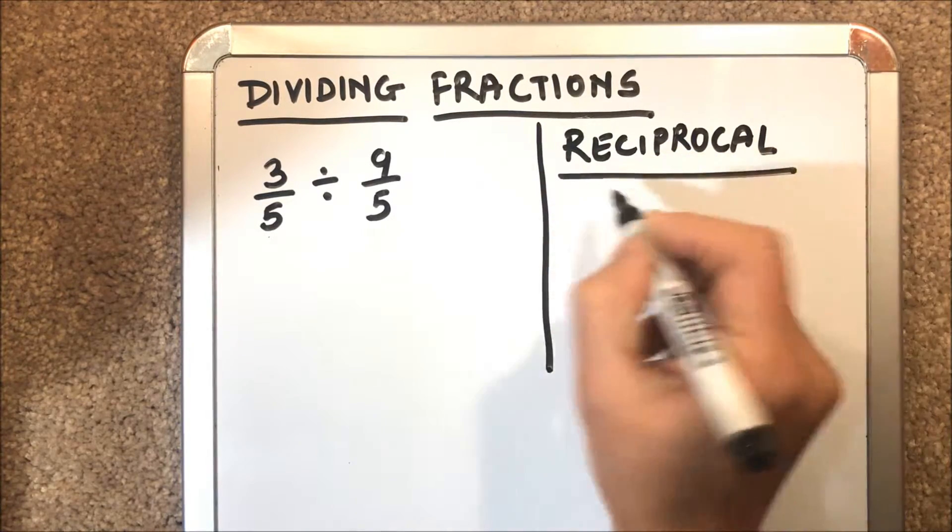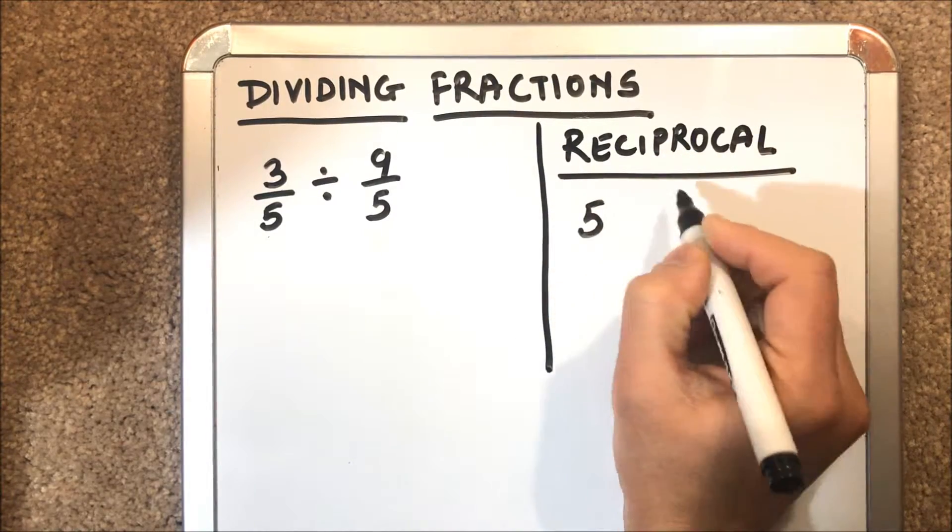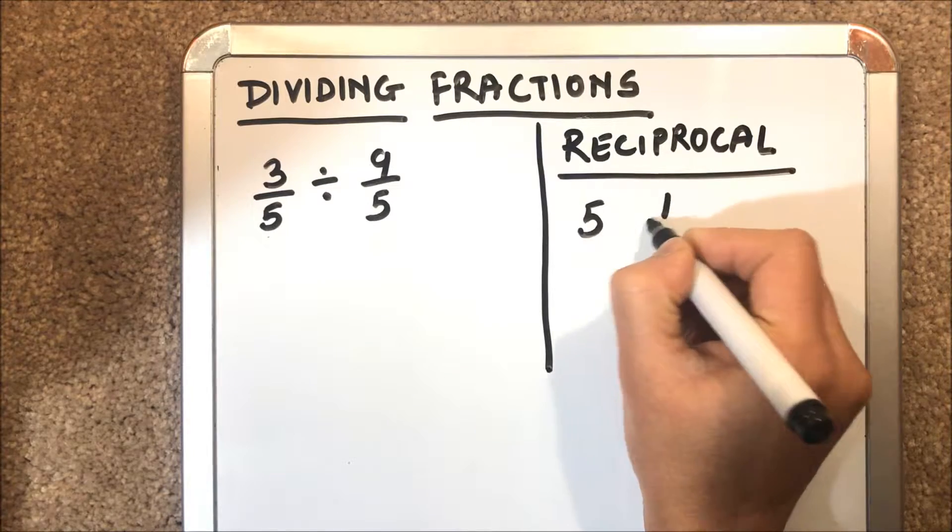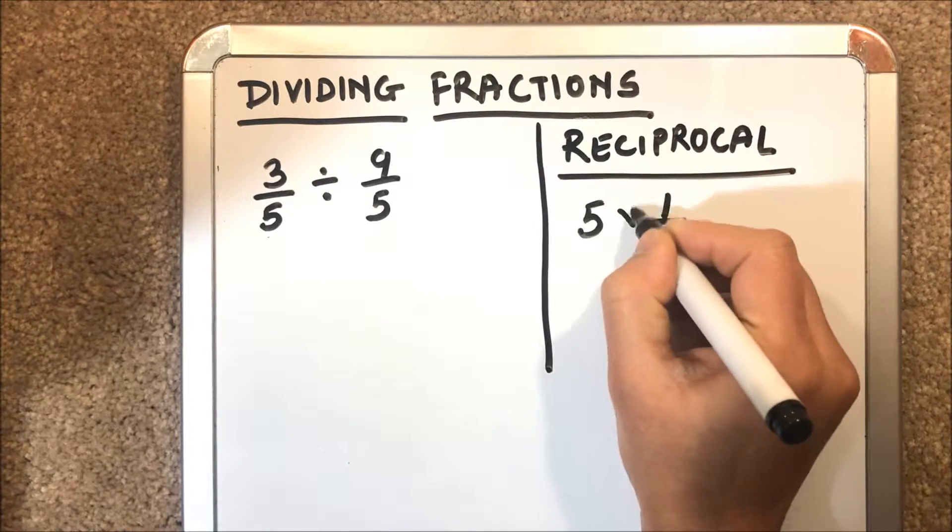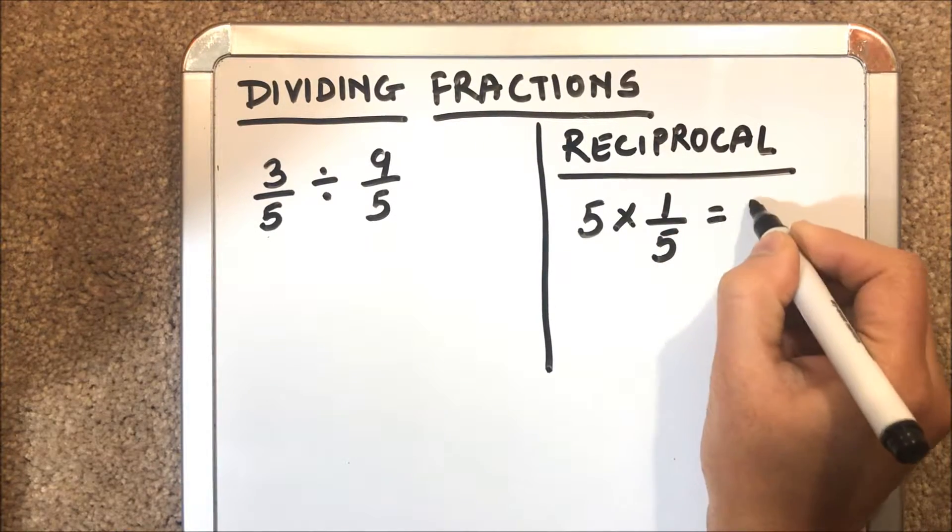If we have 5 as a number, the reciprocal of 5 will be 1 over 5. If we multiply the two numbers, we should get 1.